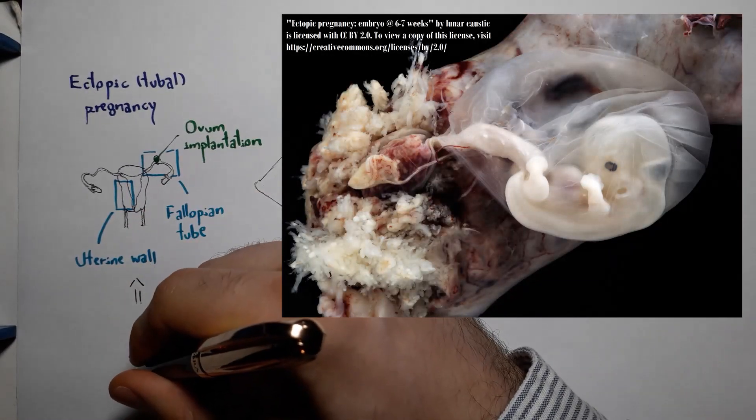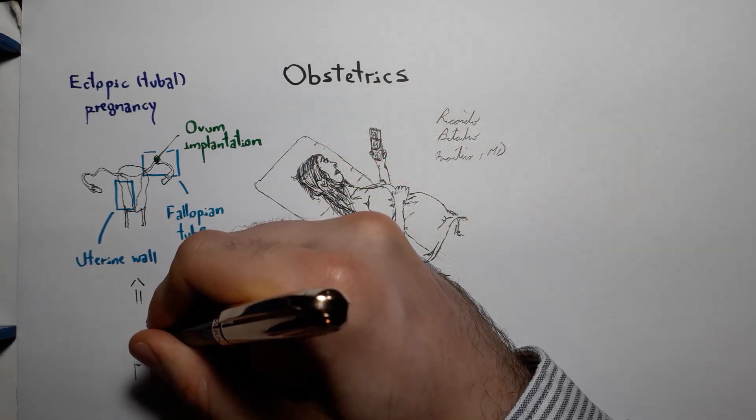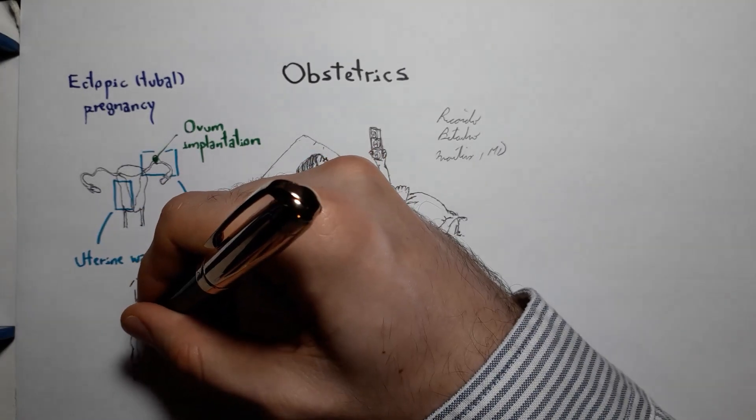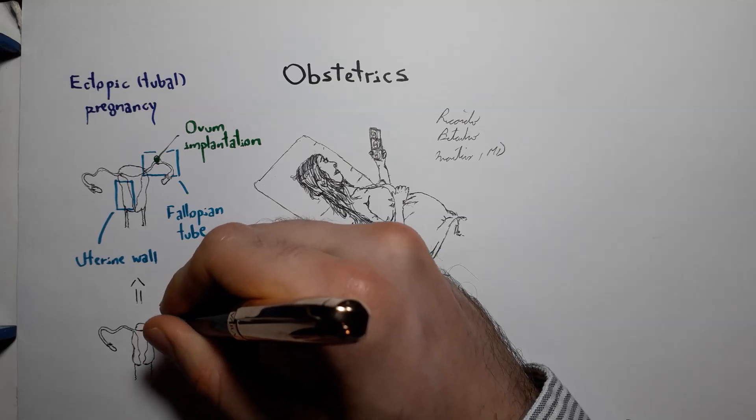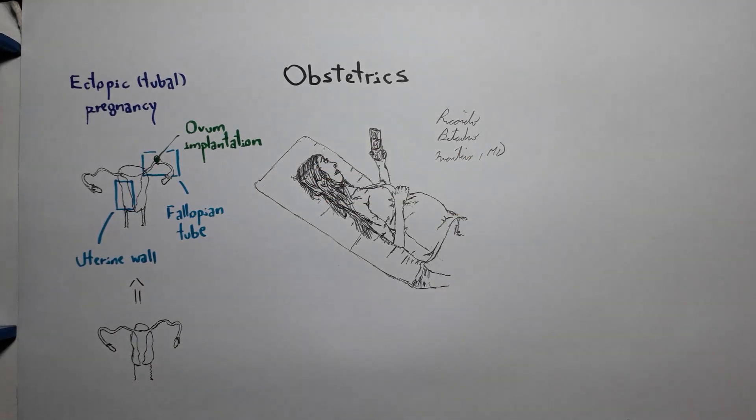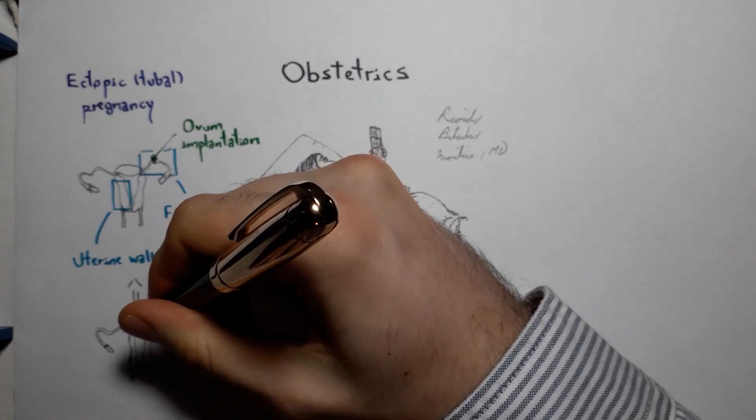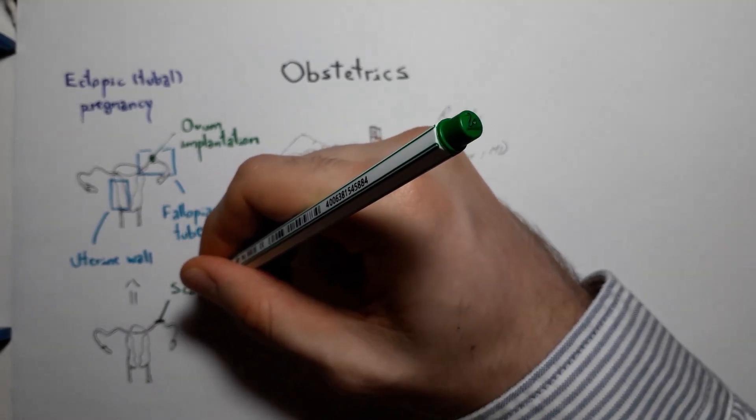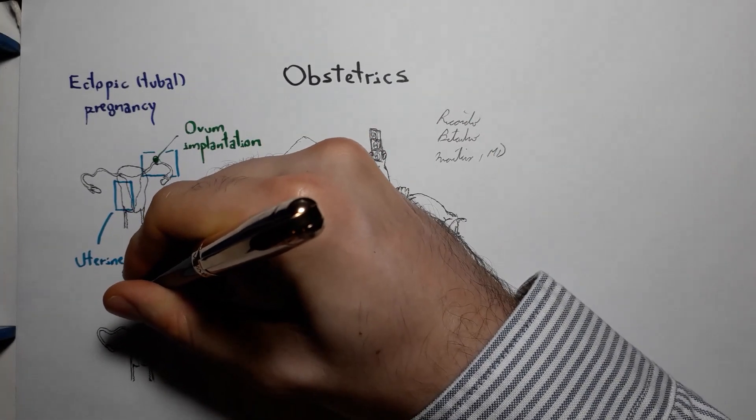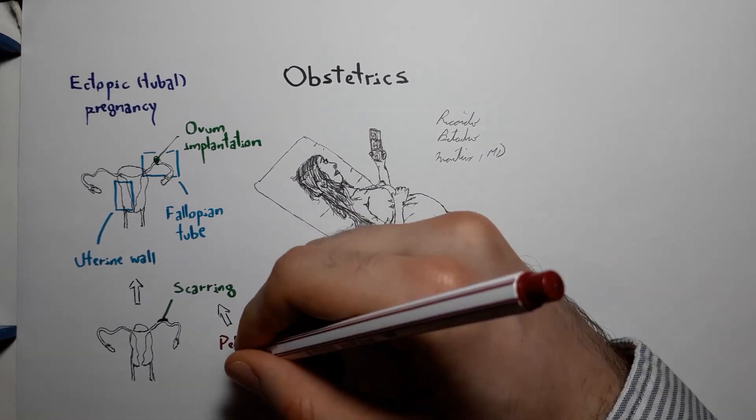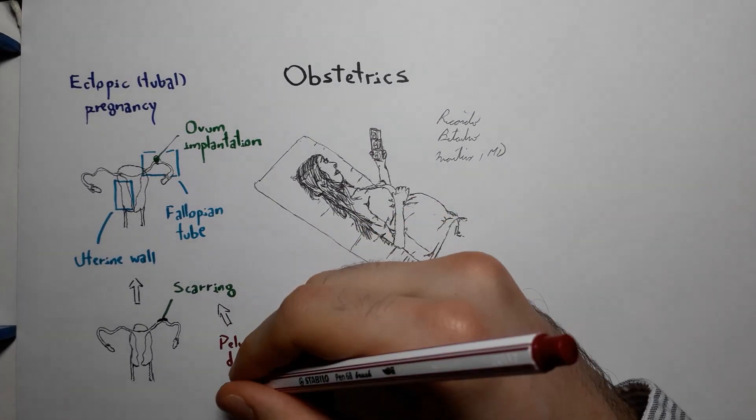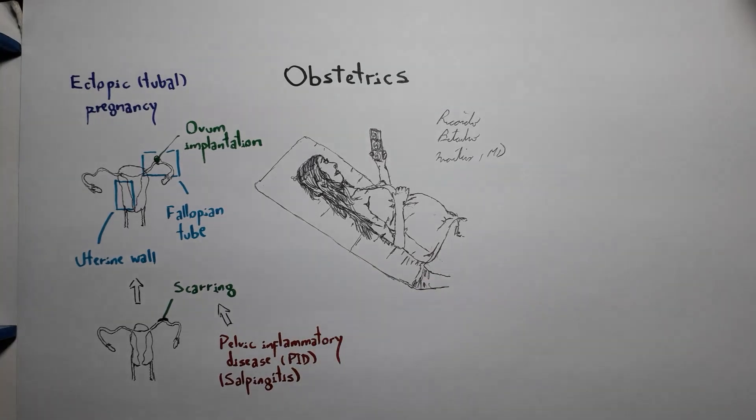A tubal pregnancy usually happens when something slows down or delays the passage of the blastocyst through the fallopian tube, classically if there is some scarring on the tubes, usually caused by a previous pelvic inflammatory disease, specifically salpingitis. In the tubes, the most common site is ampullar or in the ampulla.